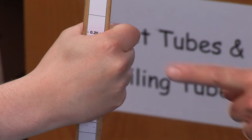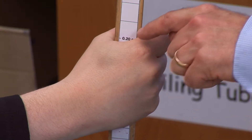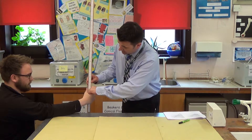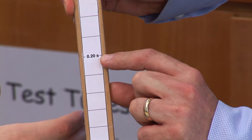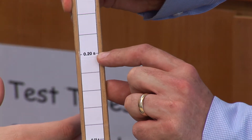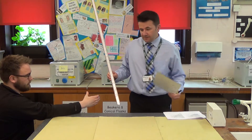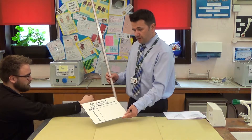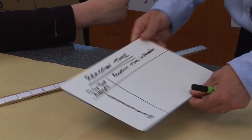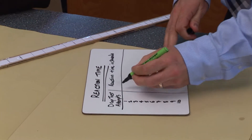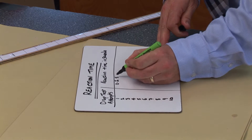He's caught the ruler, and the measurement I'm going to take is at the top of his hand, which in this case the nearest line is 0.2 seconds. So I'm going to record that in my table I prepared earlier. First attempt: 0.2 seconds.